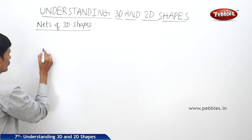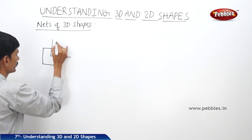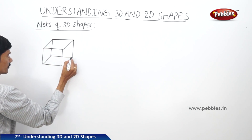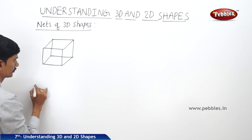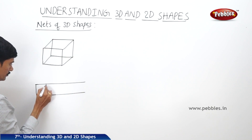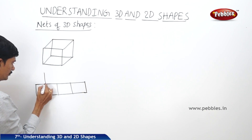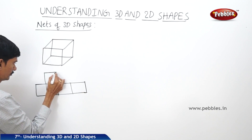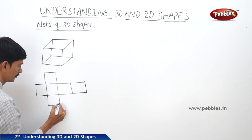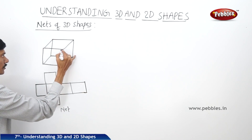For example, if you take a carton in the shape of a cube and cut along the edges, then we get a flat surface. This flat unfolded shape is the net of the cube.